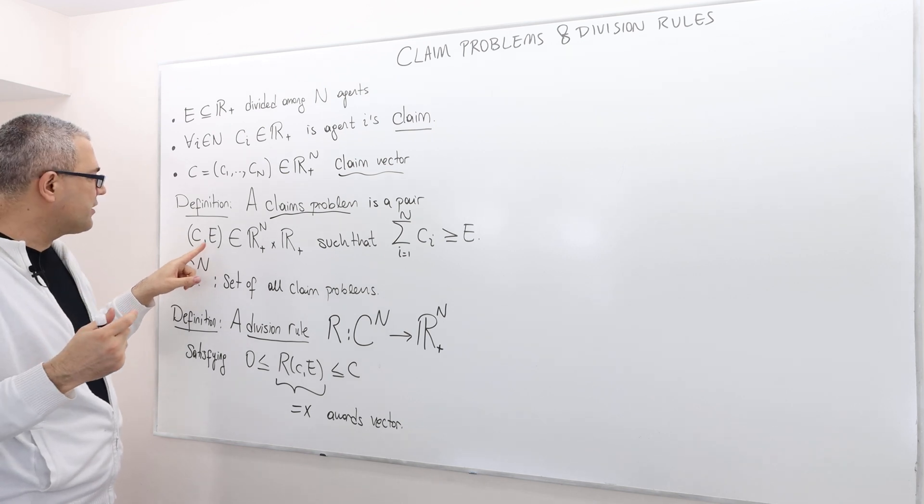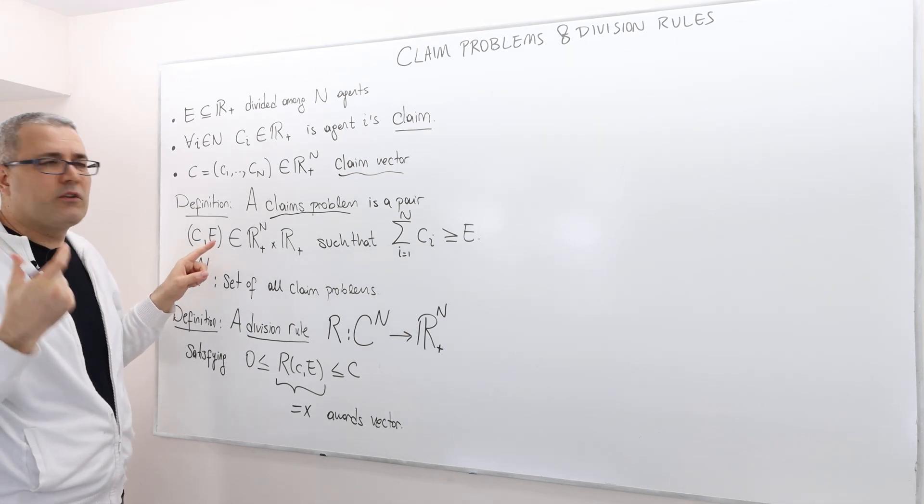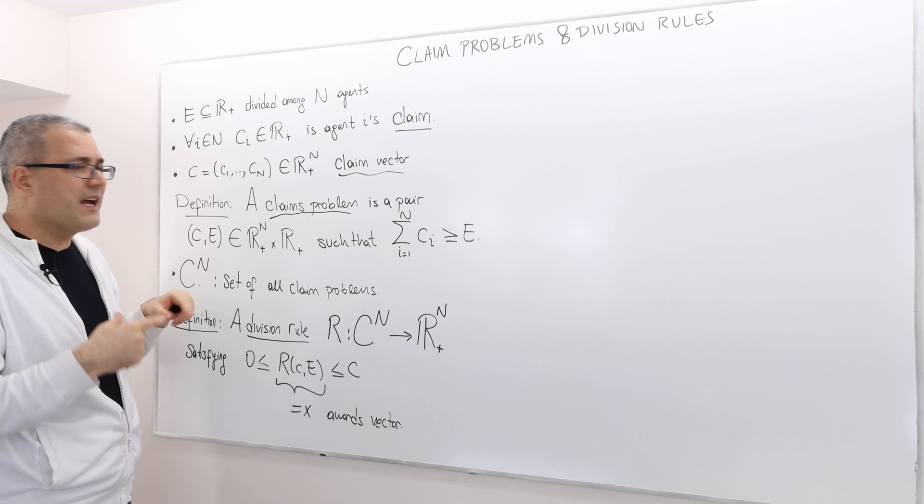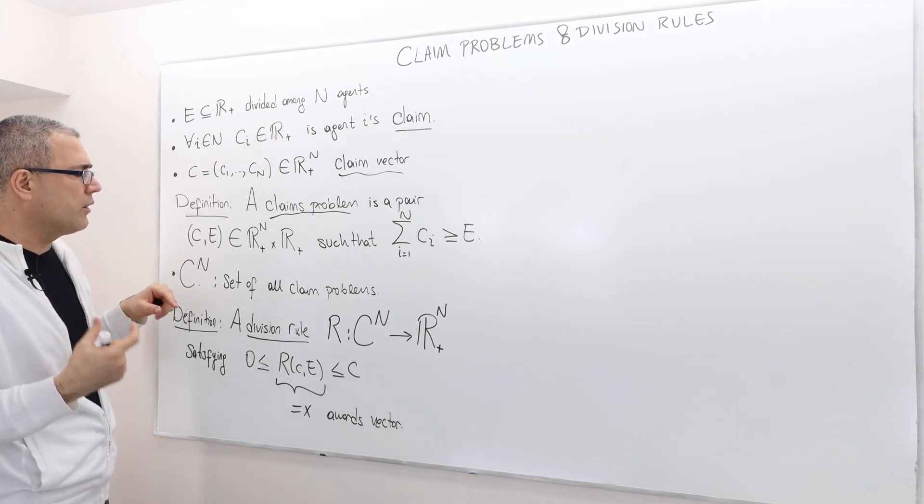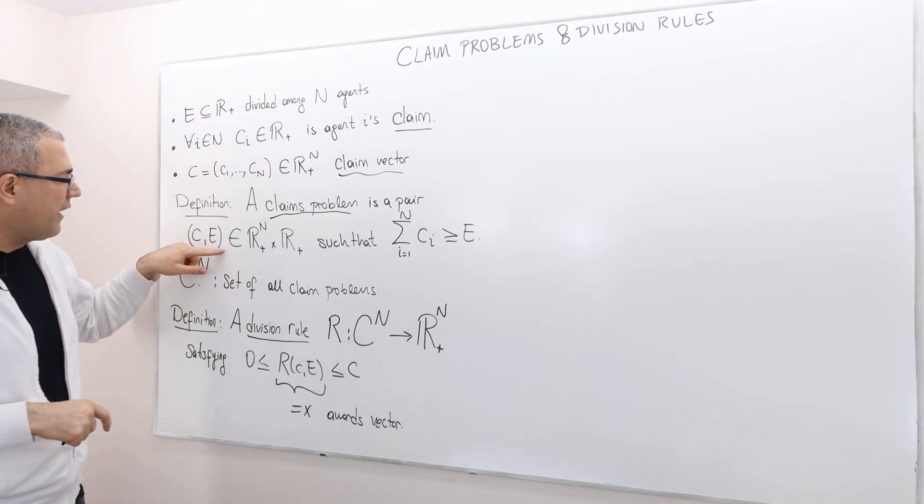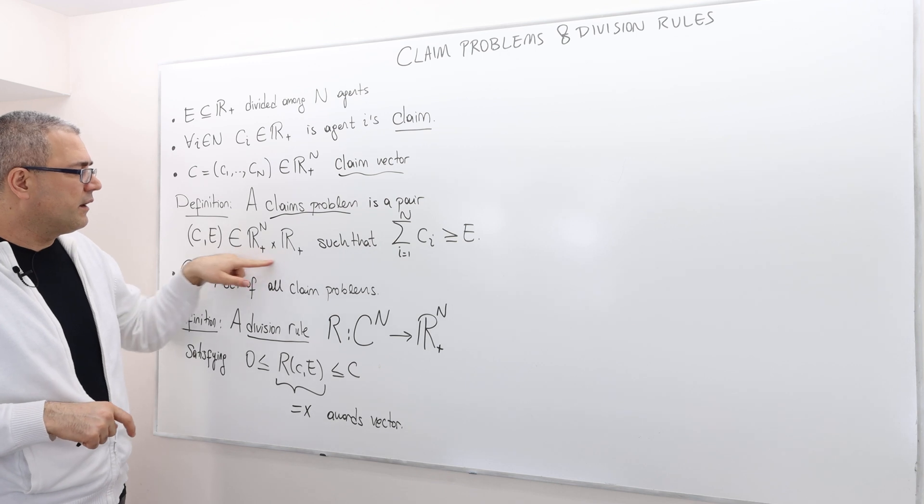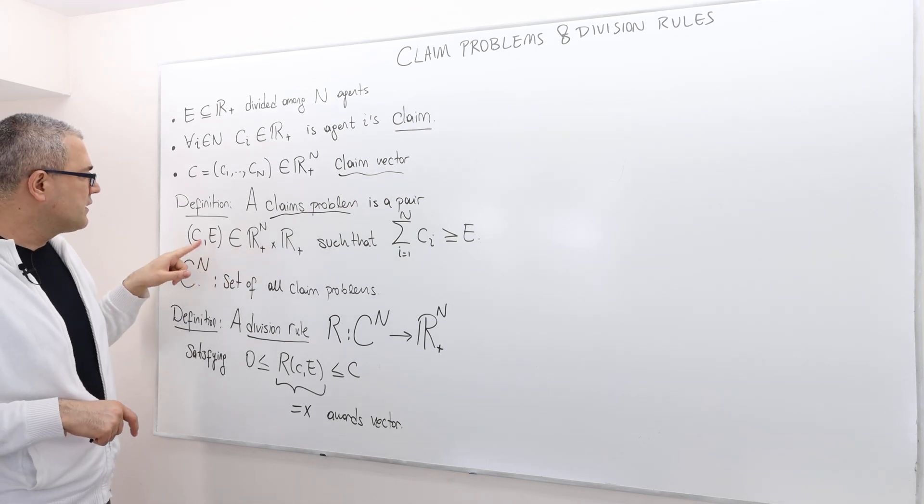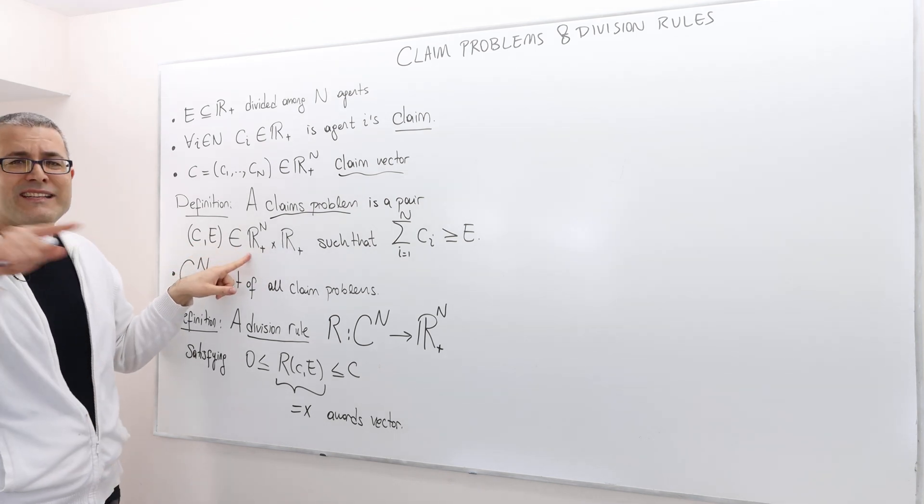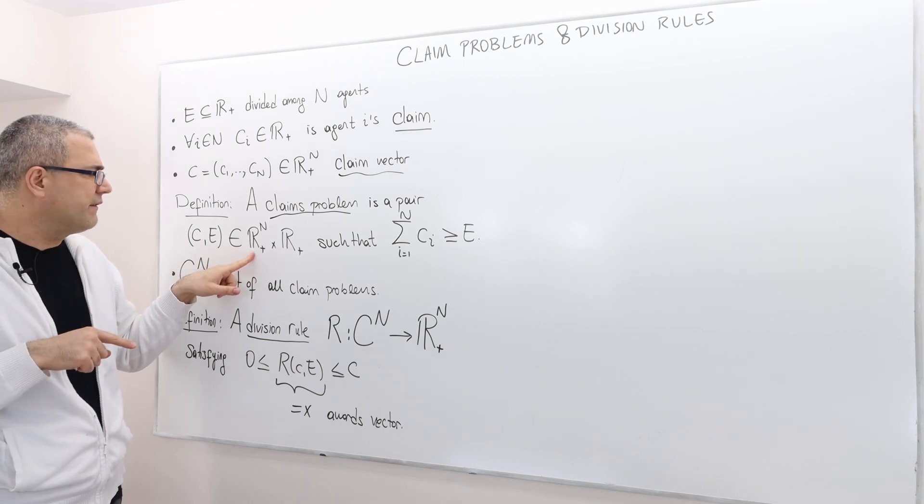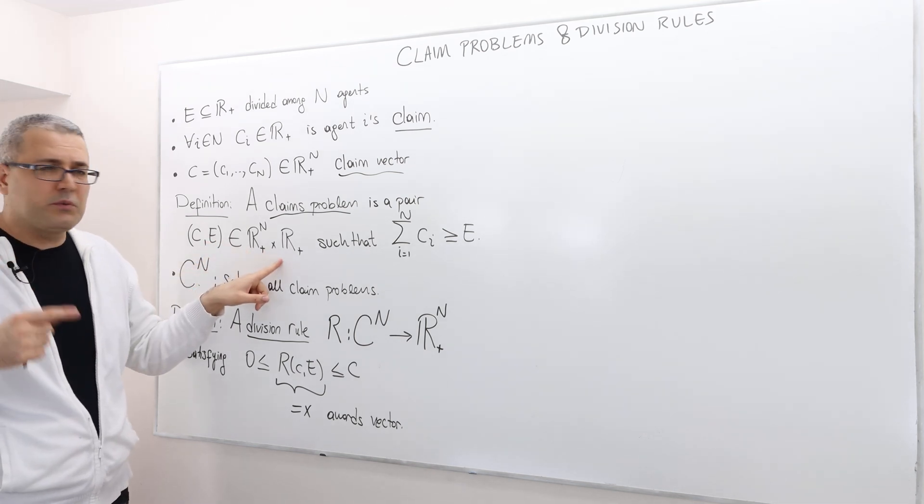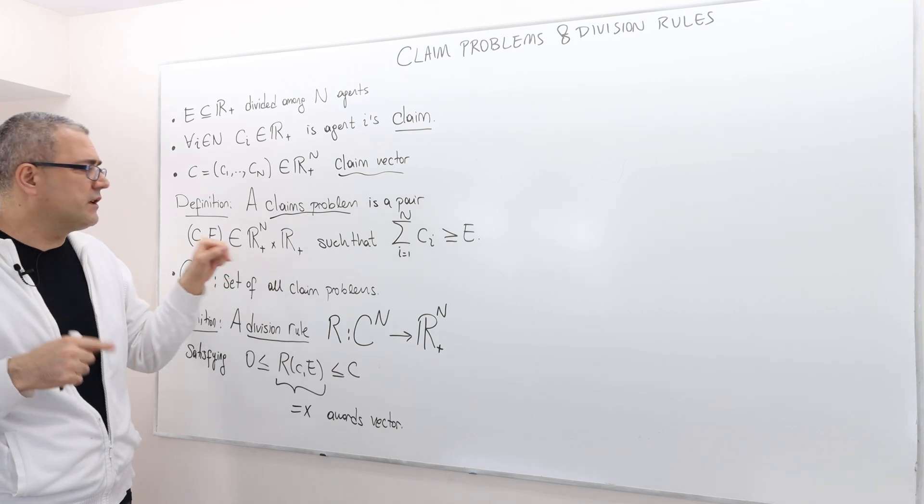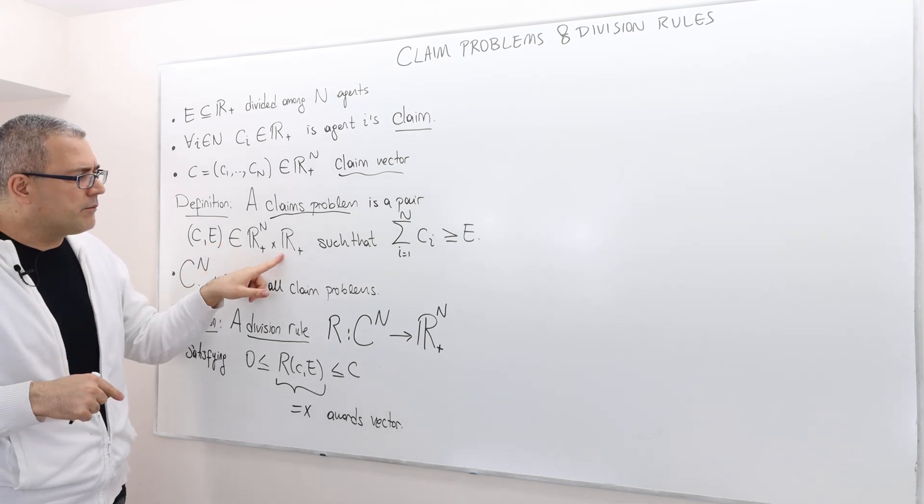So our first and the most important definition, a claims problem is a pair, C and E. C is the claim vector and E is the amount of money or amount of surplus that's going to be divided among those N agents. So this vector comes from this space. So C, remember, is an N-dimensional vector, non-negative vector. And E, the surplus is, remember, a one-dimensional positive number, a non-negative number.